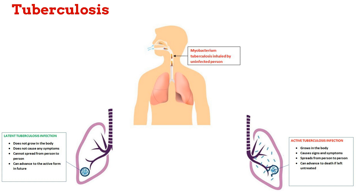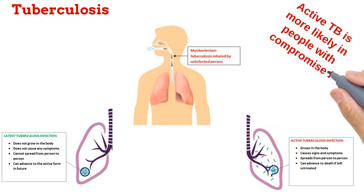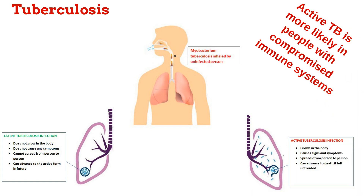Because of the body's immune system, most tuberculosis infections are the latent type — there is only a 15% chance that an active tuberculosis infection would occur. However, in people with compromised immune systems, the chances of experiencing active tuberculosis are much higher. This group of people includes people living with HIV, diabetics, people who use tobacco, and people suffering from malnutrition.